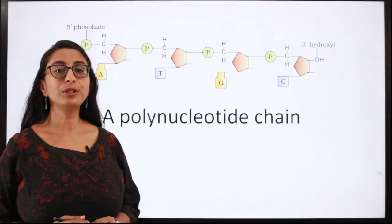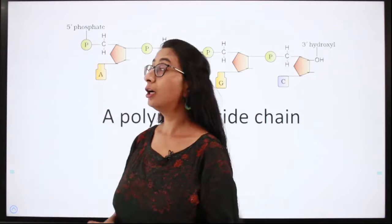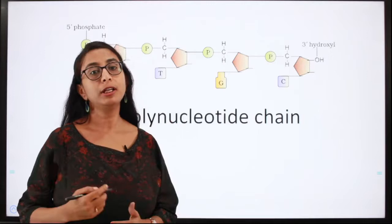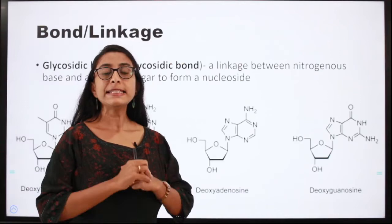DNA, or deoxyribonucleic acid, is a polymer of nucleotides — a polynucleotide chain. You can find many nucleotides attached to one another to form a chain, so it is called a polymer of nucleotides.